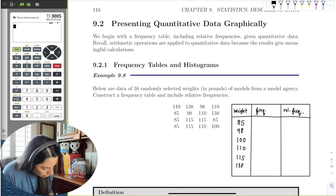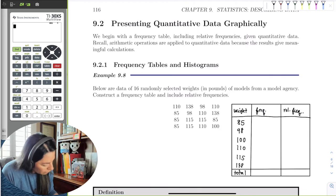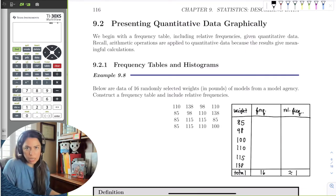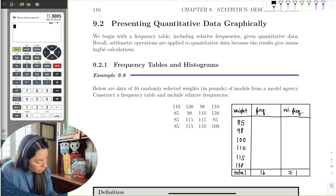Let me go ahead and make a total column. I already know what the total is. They told me I have 16 frequencies, 16 weights. And my relative frequency, always remember, it should always be about 1, 100%. So how many 85s do we have? 1, 2, 3, 4.